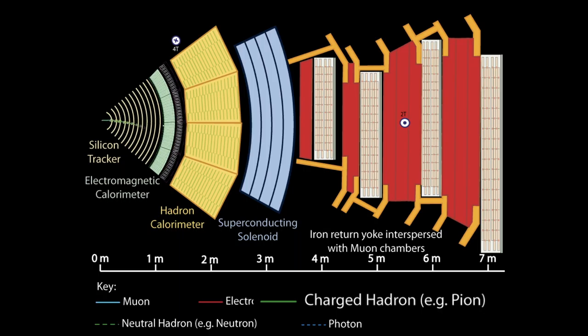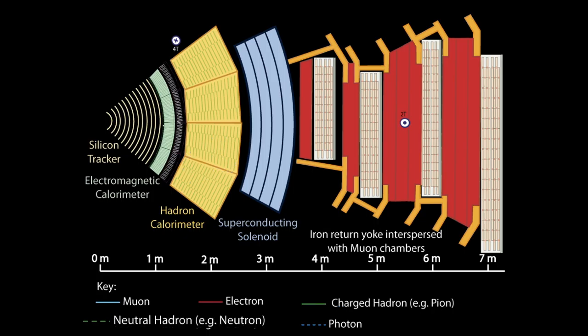Now we have a charged hadron. So it is charged, it inclines in silicon tracker, and then it stopped and leaves its track in hadron calorimeter because it's hadron. Neutral hadron would go in the same way, so would be stopped in the hadron calorimeter, but would go straight through silicon tracker because it is neutral, it is not charged, so it wouldn't incline.